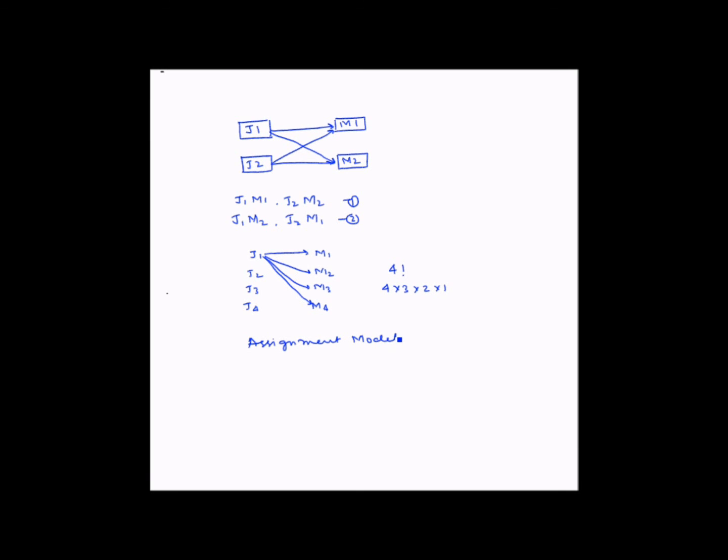This assignment technique is useful when the number of sources, that is these, equal to the number of destinations, that is the machines or the routes, and the capacity and demand value is exactly one unit.